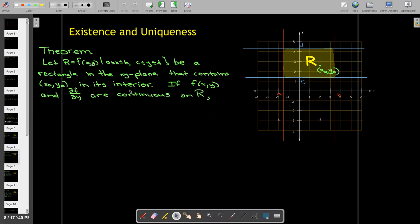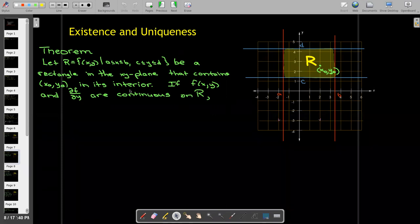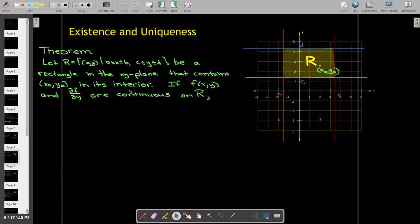And then we're going to require that both the right-hand side and the partial derivative of the right-hand side—that's the function f, the partial derivative of f with respect to y—are continuous on this rectangle. So both functions have to be continuous.